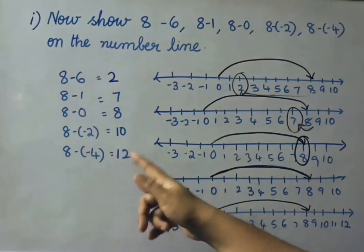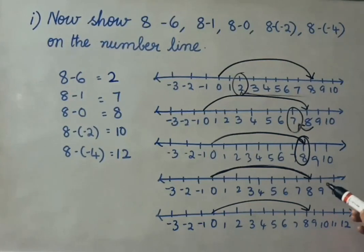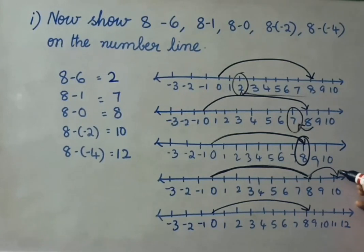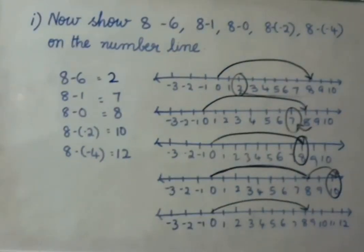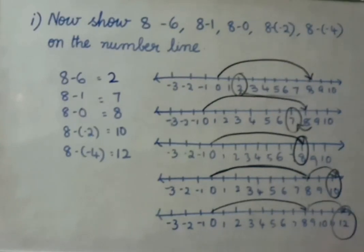See the next one: 8 minus of minus 2 — that means 8 plus 2, that is 10. First show 0 onwards 8, then move right side 2 numbers, giving 10 as the answer. Next: 8 minus of minus 4 — that equals 8 plus 4, that is 12. First show 0 onwards 8, then move 4 numbers to the right — 1, 2, 3, 4 — so from 8 onwards we mark 12. So 12 is our answer.